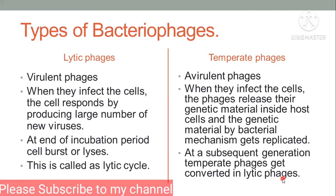There is also another type called filamentous phages. In this type, they don't lyse the cell — they don't harm the cell. They just get replicated and are released by leaking out from the bacterial cell.